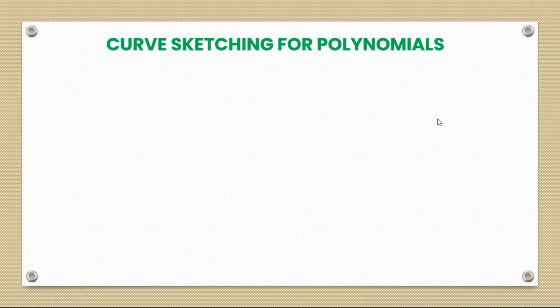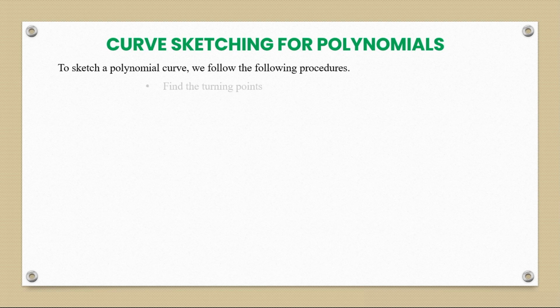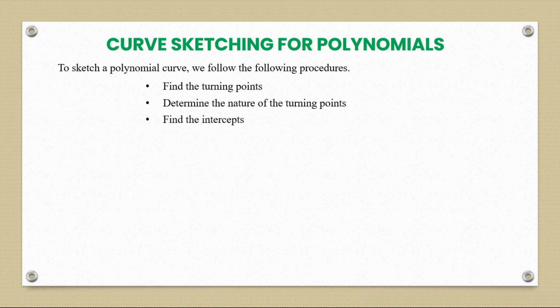Today we look at curve sketching for polynomials. To sketch a polynomial curve, we follow these procedures: first we find the turning points, which we emphasized in former videos; next we determine the nature of the turning points; then we find the intercepts; and after that we can sketch the curve.